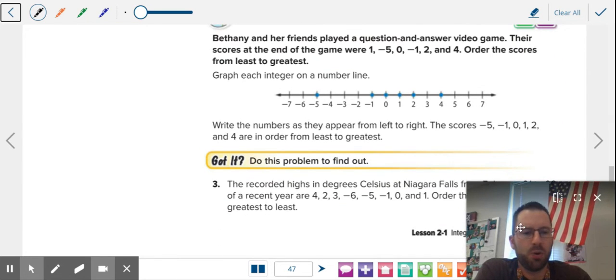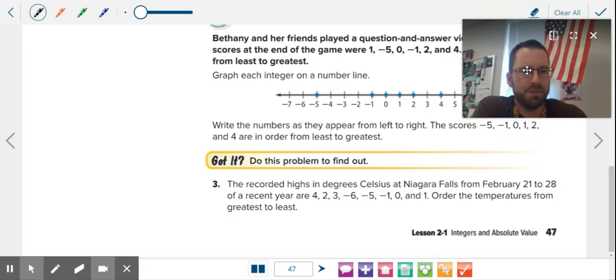Now, let's talk about ordering some integers here. Record highs in degrees Celsius in Niagara Falls from February 21st to 28th of a recent year are listed here. Four, two, three, negative six, negative five, negative one, zero, and one. Order the temperatures from the least to greatest.